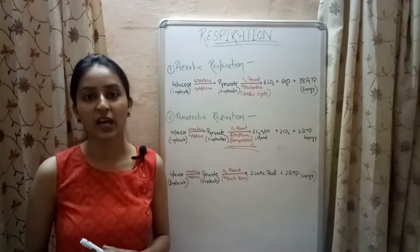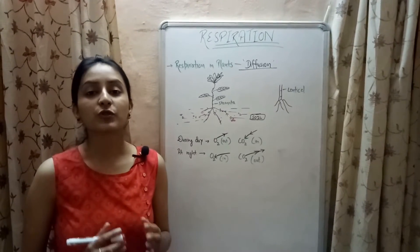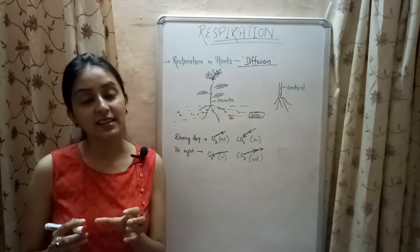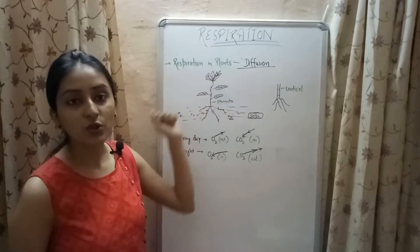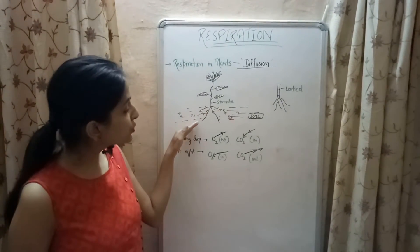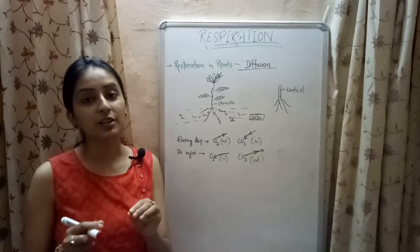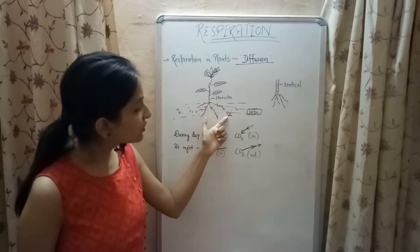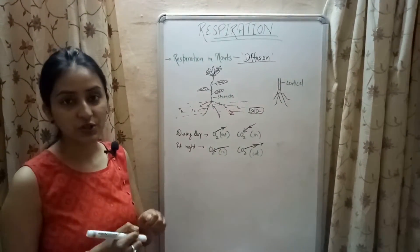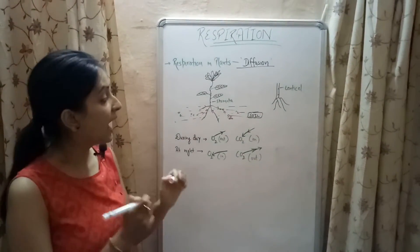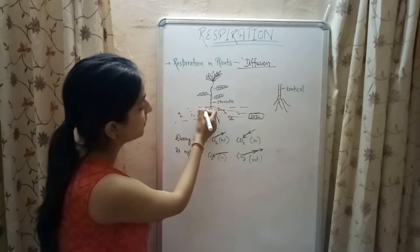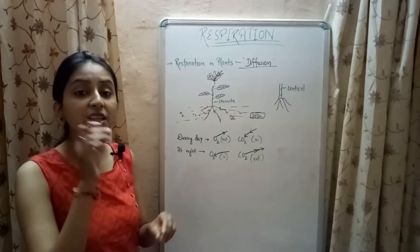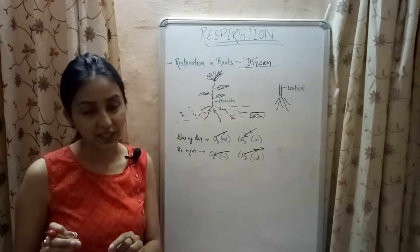Now let's see how respiration occurs in different living organisms. Different parts of the plant perform respiration differently, but in animals respiration occurs as a single unit. In plants, respiration occurs by diffusion. The roots of the plant contain epidermal cells known as root hair, and these root hairs come in contact with the oxygen present in the soil, absorbing it by diffusion and transporting it into different parts of the root.